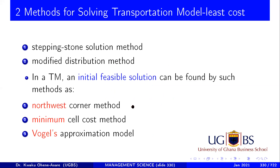There are methods for solving this transportation problem. The first is the stepping stone method, and then the modified distribution method — these are the optimal solution steps. Remember the simplex method: the initial feasible solution and that principle. Before you can solve any transportation model, you need to find an initial feasible solution, which is a solution but not optimal. There are three ways: the Northwest corner method, the minimum cell cost method, and Vogel's approximation method.